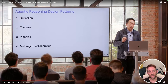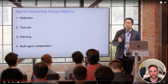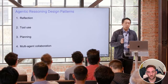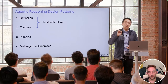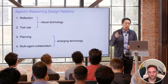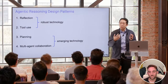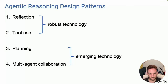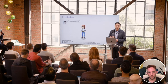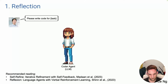Andrew Ng covers four design patterns. Reflection is a tool that just works and is more widely appreciated. Tool use also works pretty well — these are fairly robust technologies. Planning and multi-agent collaboration are more emerging; sometimes the results are mind-blowing, but they don't work reliably yet. He says using these four patterns can give you a productivity boost quite quickly.